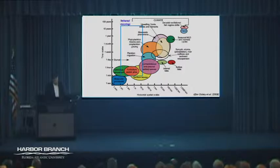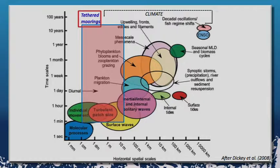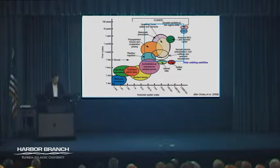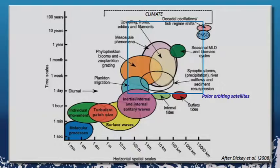The challenge from a technology perspective is to resolve these different processes with different platforms and different sensors. One platform we use is a tethered mooring. Tethered moorings have a very limited horizontal spatial scale, but they can sample as quickly as every minute, and some moorings have been out for decades. There are literally hundreds of moorings now around the coastal United States, mostly in embayments. Here in the Indian River Lagoon, Dennis manages a system called Lobo Observatory, a whole sequence of tethered moorings.